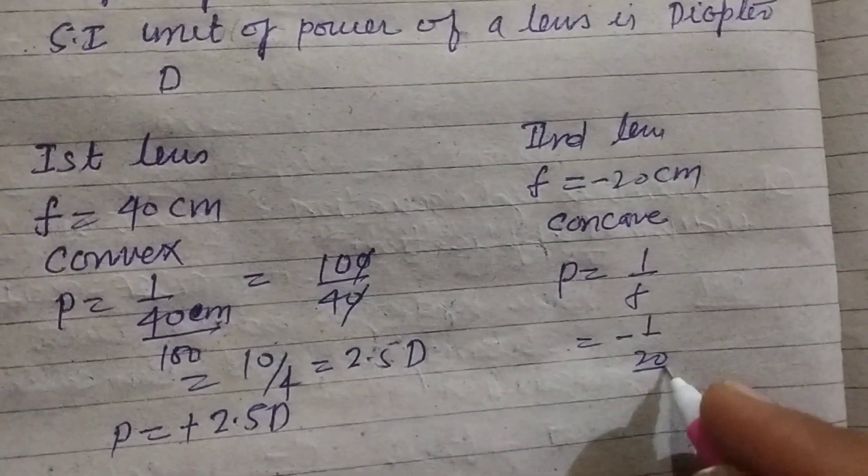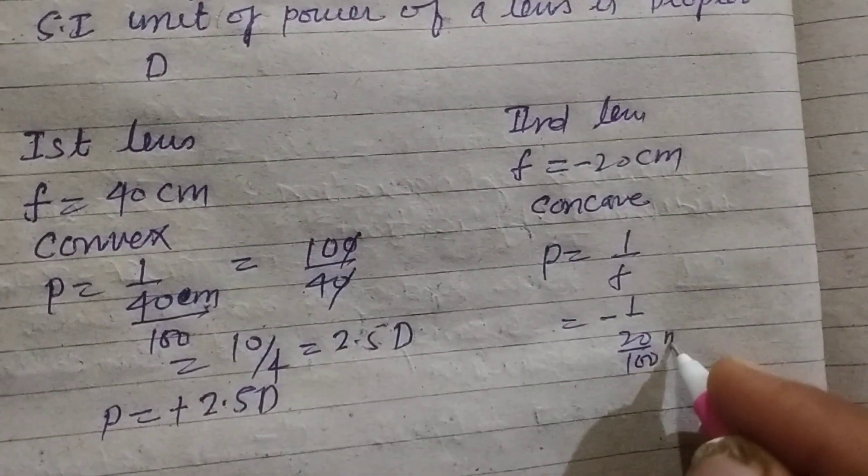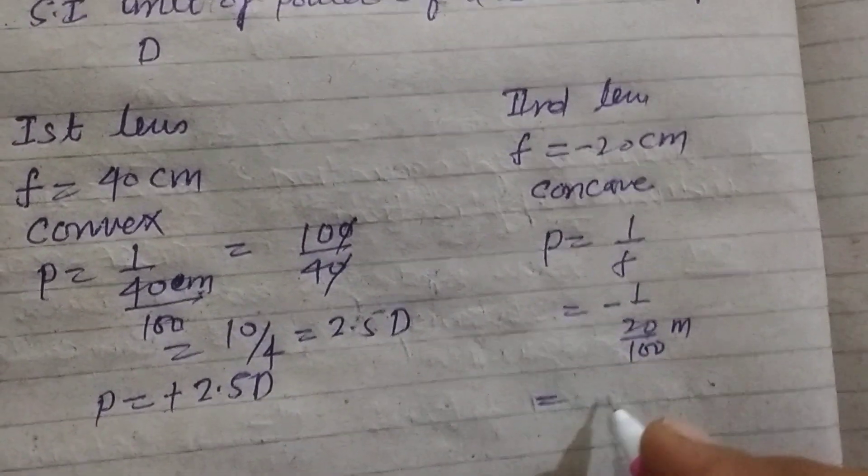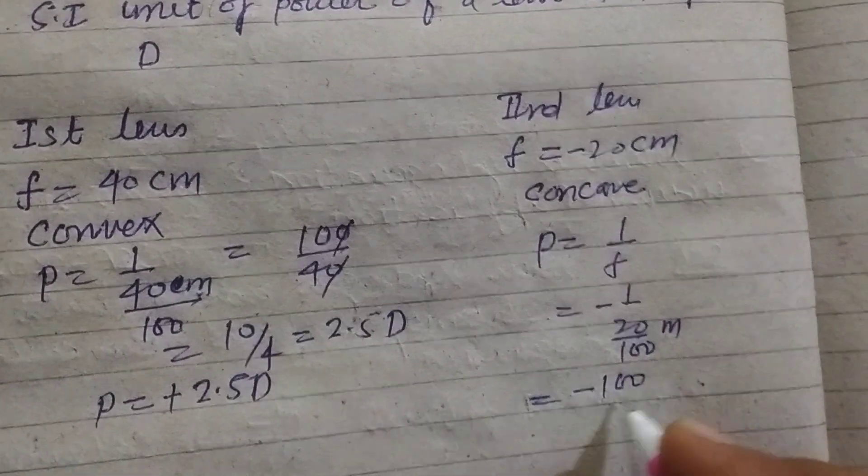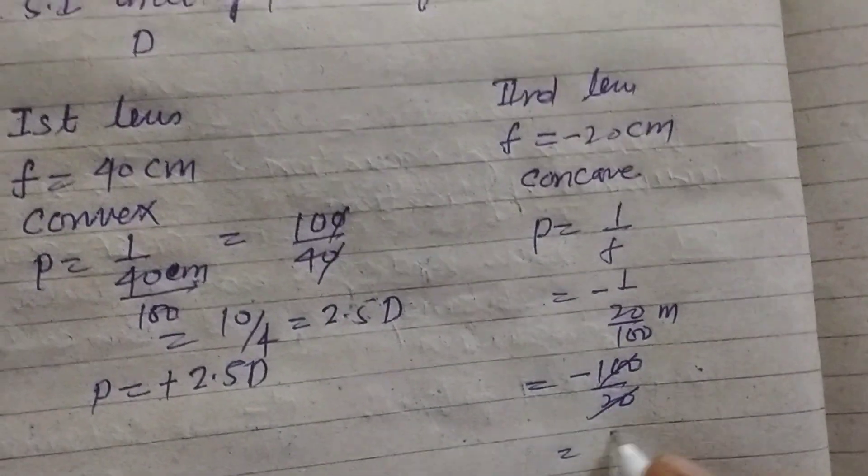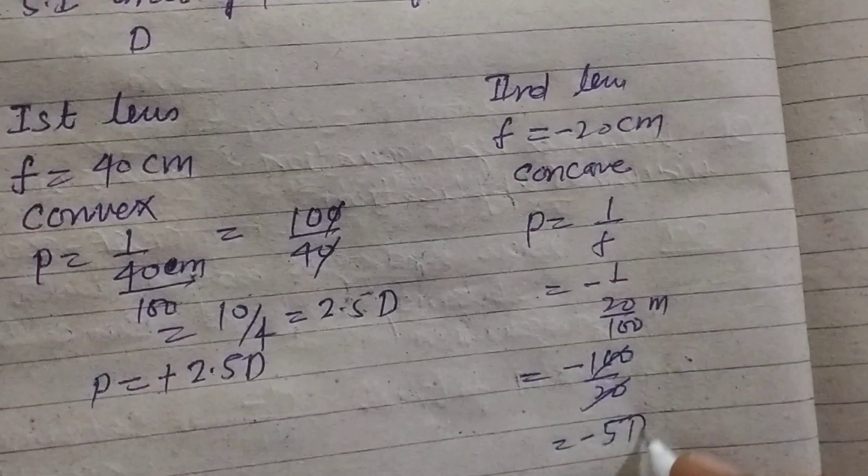1 upon minus 20 divided by 100, this is in meter. So minus 100 upon 20, this is minus 5 diopter.